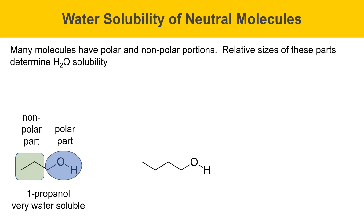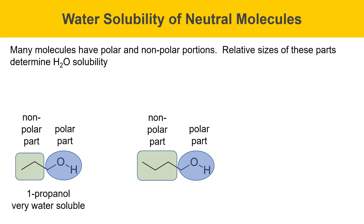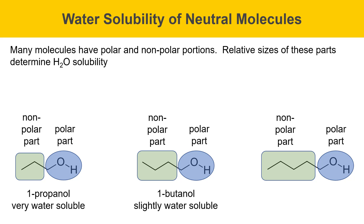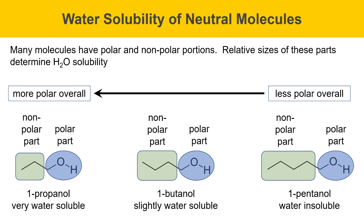Now let's look at 1-butanol, one carbon longer than 1-propanol. It has the same polar part but a longer nonpolar part with more nonpolar atoms. This molecule is slightly water soluble — a lot less so than 1-propanol because the nonpolar part has become larger. Taking that a step further, 1-pentanol has the same polar part but an even longer nonpolar part. 1-pentanol is essentially water insoluble. So as you move to longer chains, the molecule is less polar overall because its nonpolar portion has become larger and more important.